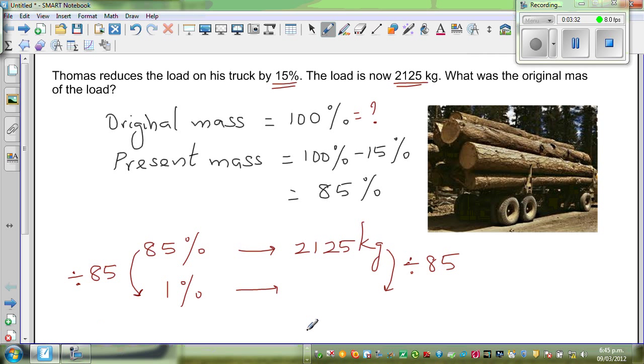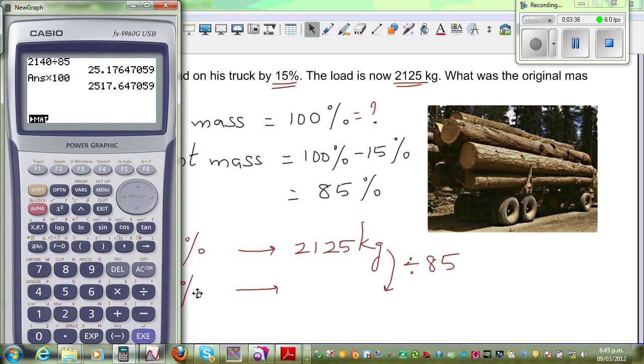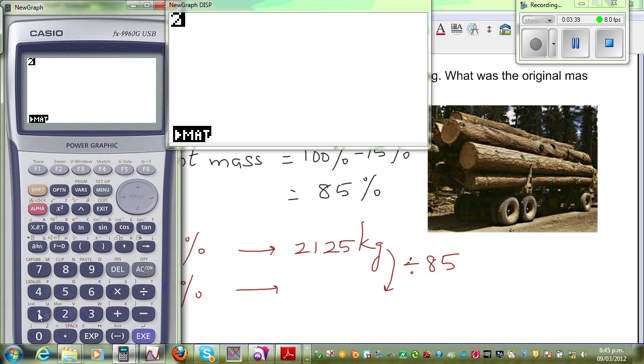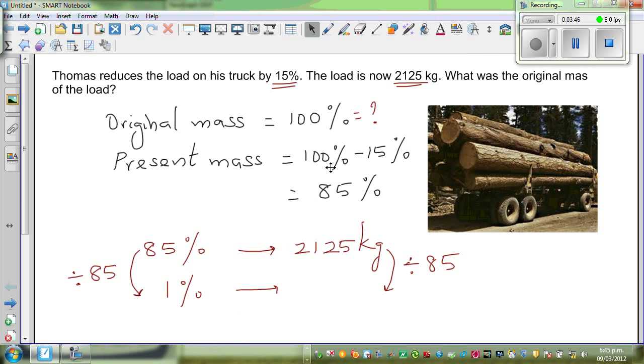So let me get my calculator out. So this is my calculator. So this is 2125 divided by 85, which is 25 kg. So 1% is 25 kg.